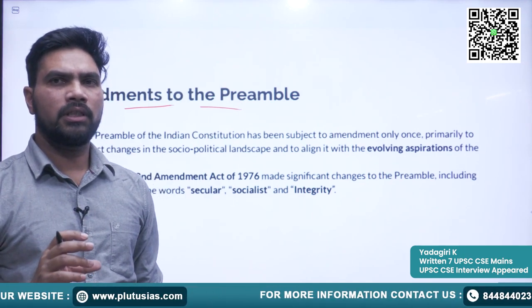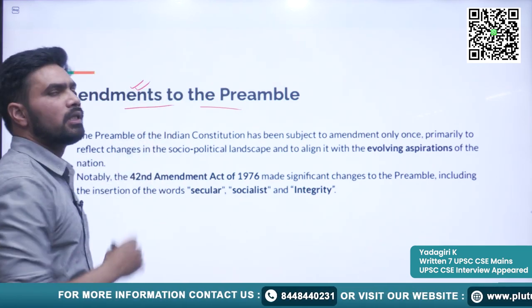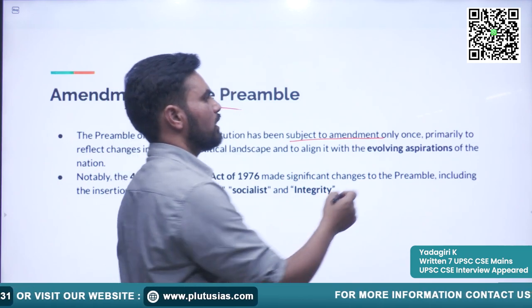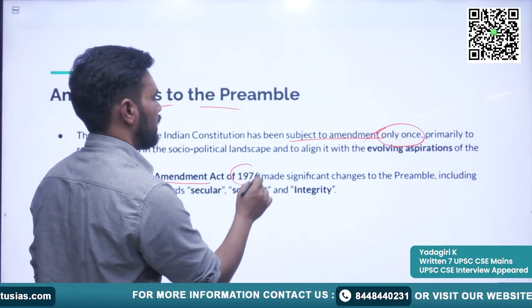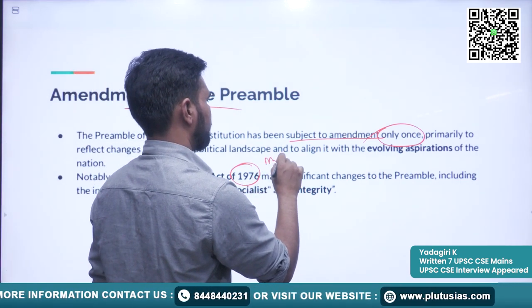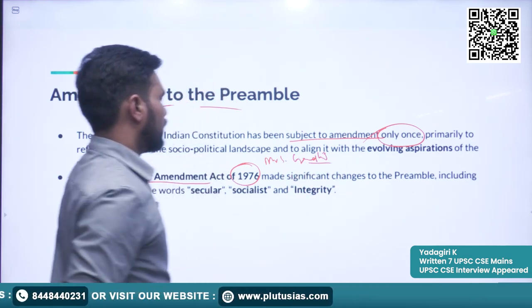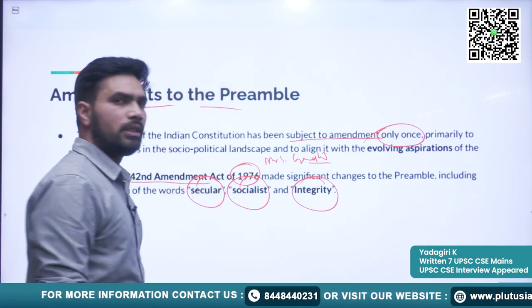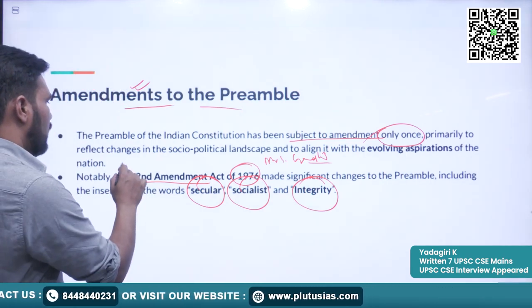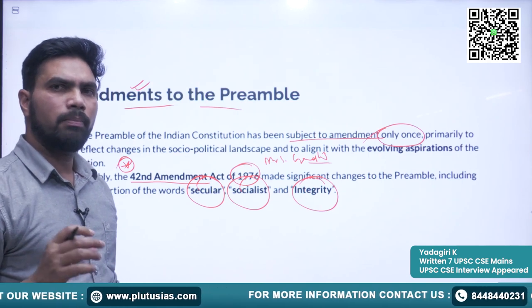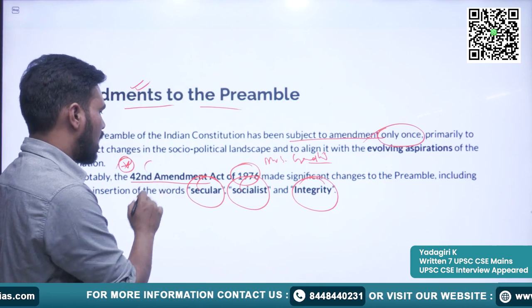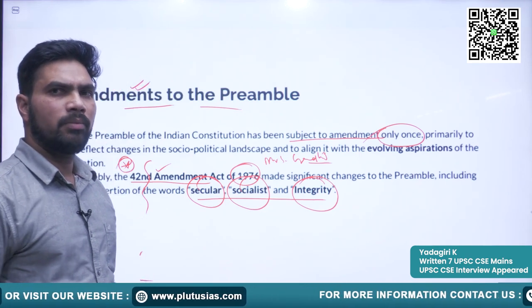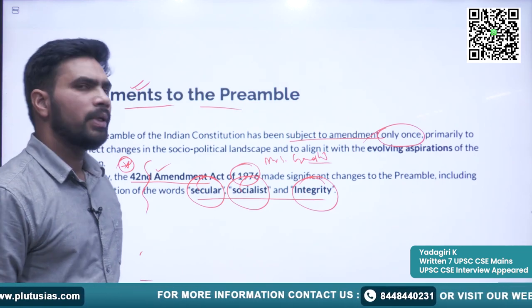Having understood the four basic phrases in the constitution, we will now look at amendments to the preamble. The preamble has been amended only once, through the 42nd Amendment in 1976 when Mrs. Gandhi was prime minister. Three words — secular, socialist, and integrity — were incorporated into the preamble. This is very important information and has already been asked in the prelims examination, so please try to remember it.